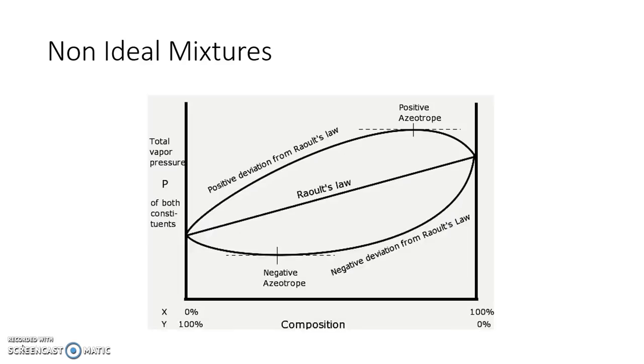Non-ideality comes by means of attractive forces between two molecules. Whenever I mix two different molecules, if the forces of attraction between the two molecules are the same as their pure components, the mixture formed is ideal. But if that is not the case, you may have positive or negative deviation from Raoult's law. When I mix two molecules and the attractive forces between those two molecules are weaker compared to Raoult's law, more molecules go into the vapor phase and you have a positive deviation.